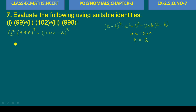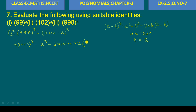Substituting the values: a equals 1000, b equals 2. So we get 1000 cube minus 2 cube minus 3 times 1000 times 2 into (1000 minus 2). Now 1000 to the power cube gives us 1 followed by zeros.